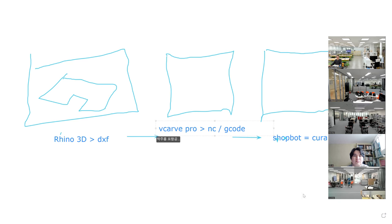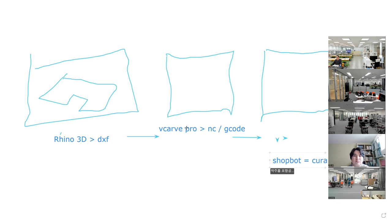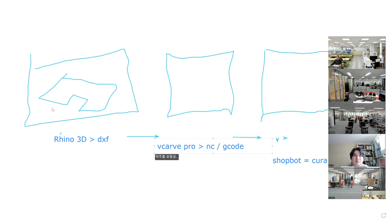This is the overall flow: we draw in Rhino 3D to generate a DXF file, then we generate NC-code or G-code using VCarve Pro, and then ShopBot is the software to control the CNC machine.